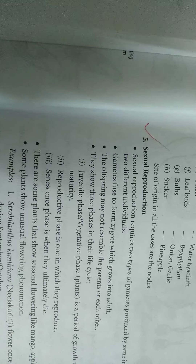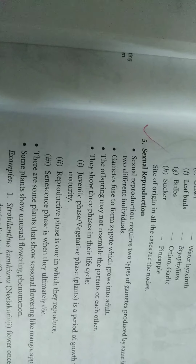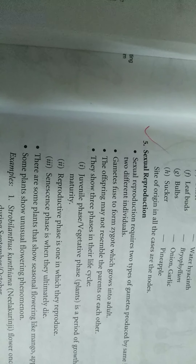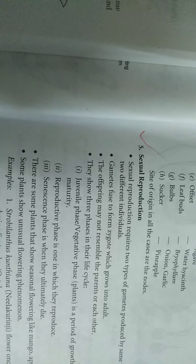Continuous breeders reproduce throughout their lifespan of sexual maturity, e.g. cattle, poultry, rabbit.